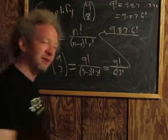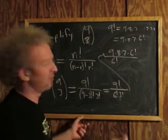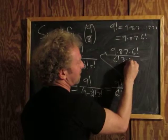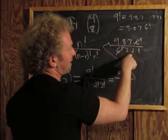The top is 9 factorial. The bottom has 6 factorial and 3 factorial, which is 3 times 2 times 1. The 6 factorials cancel, leaving 9 times 8 times 7 divided by 3 times 2 times 1.